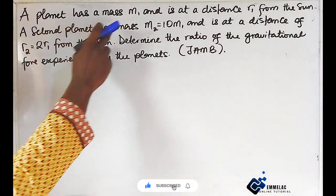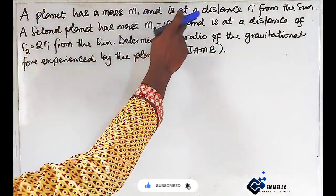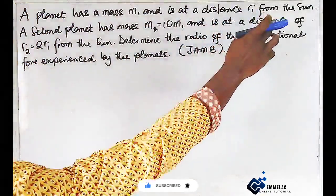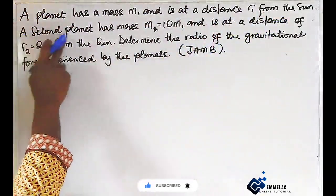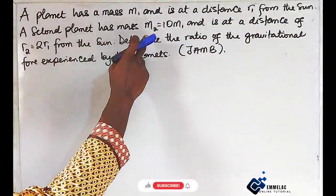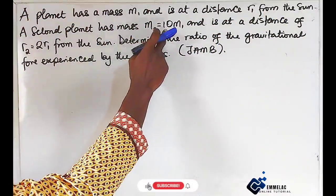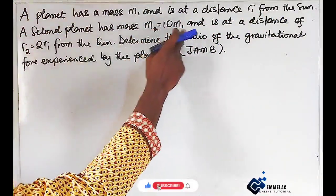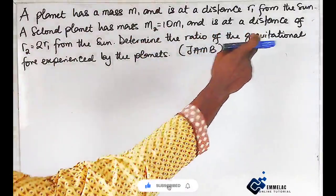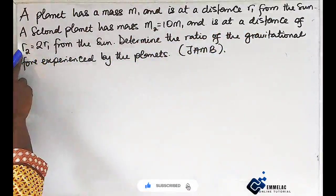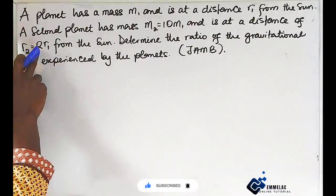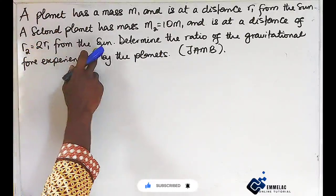The planet has a mass m1 and is at a distance r1 from the sun. The second planet has mass m2 which equals 10m1 and is at a distance of r2 which is 2r1 from the sun.